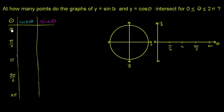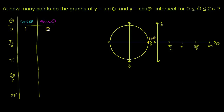When theta equals 0, you're at the point (1, 0) on the unit circle. Cosine of theta is the x-coordinate, so cosine of 0 is 1, and sine of theta is the y-coordinate, so sine of 0 is 0.